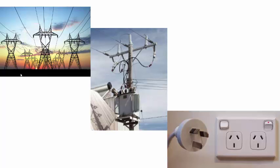Power is brought to buildings using extremely high voltage power lines at hundreds of thousands of volts. Power lines allow electrical energy to be transferred over hundreds of kilometres. This voltage is then decreased or transformed by one of these transformers when it reaches your house or office, so there is only 240 volts at the power points where we plug in our appliances.